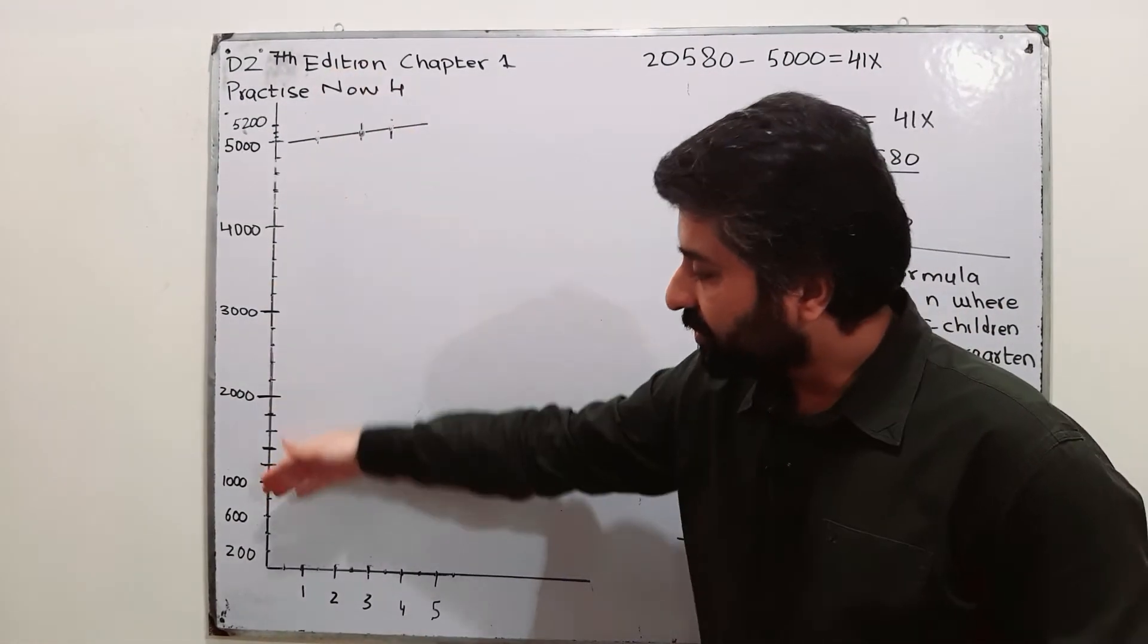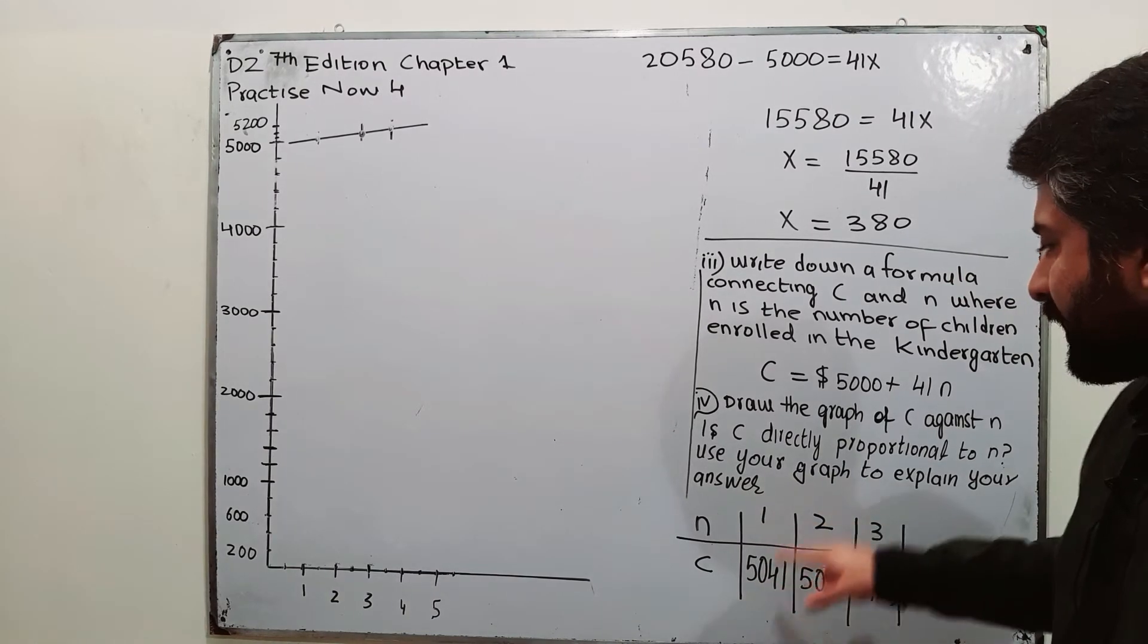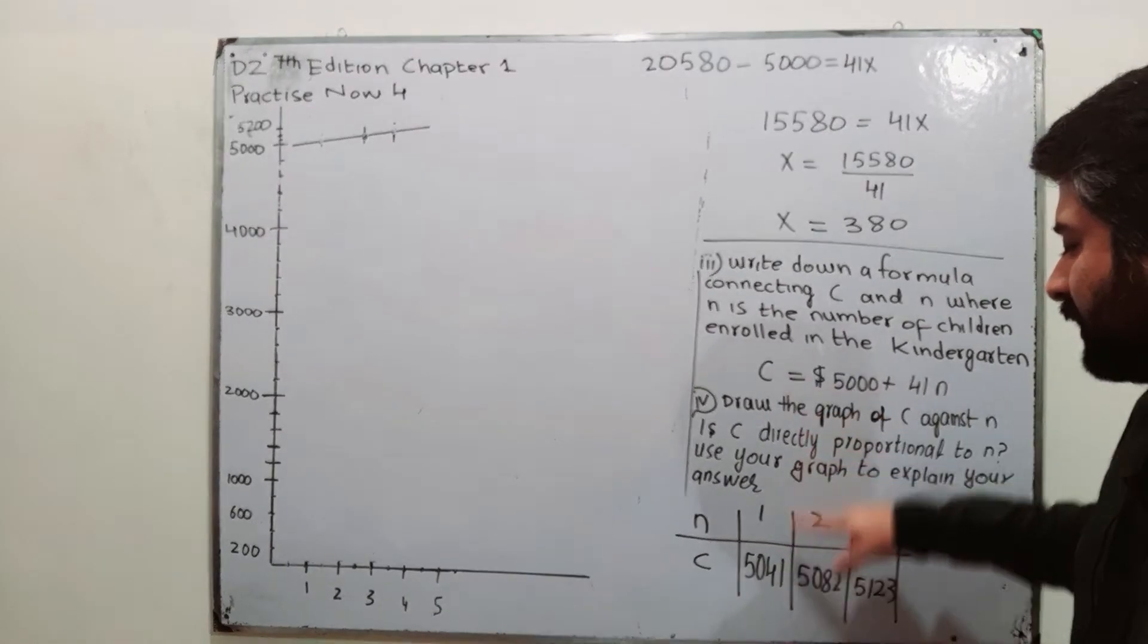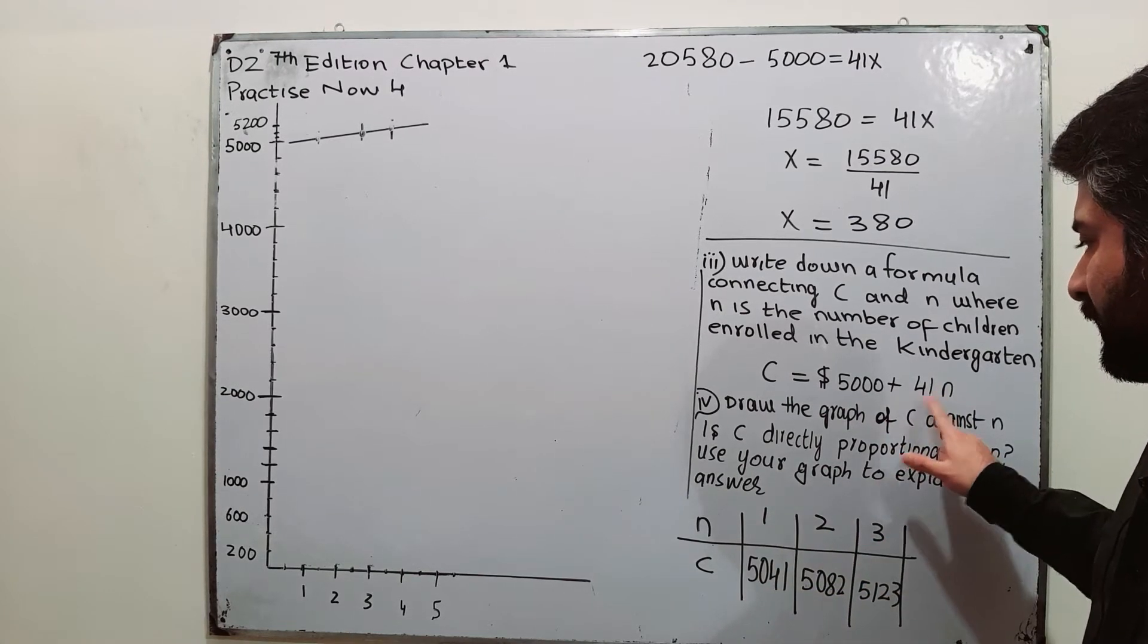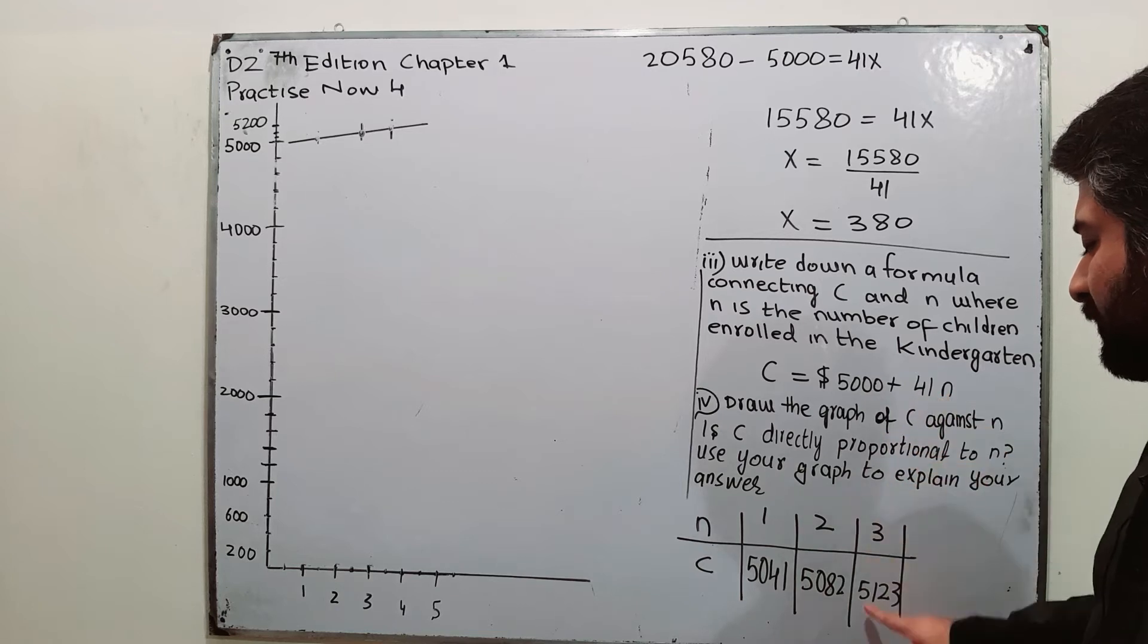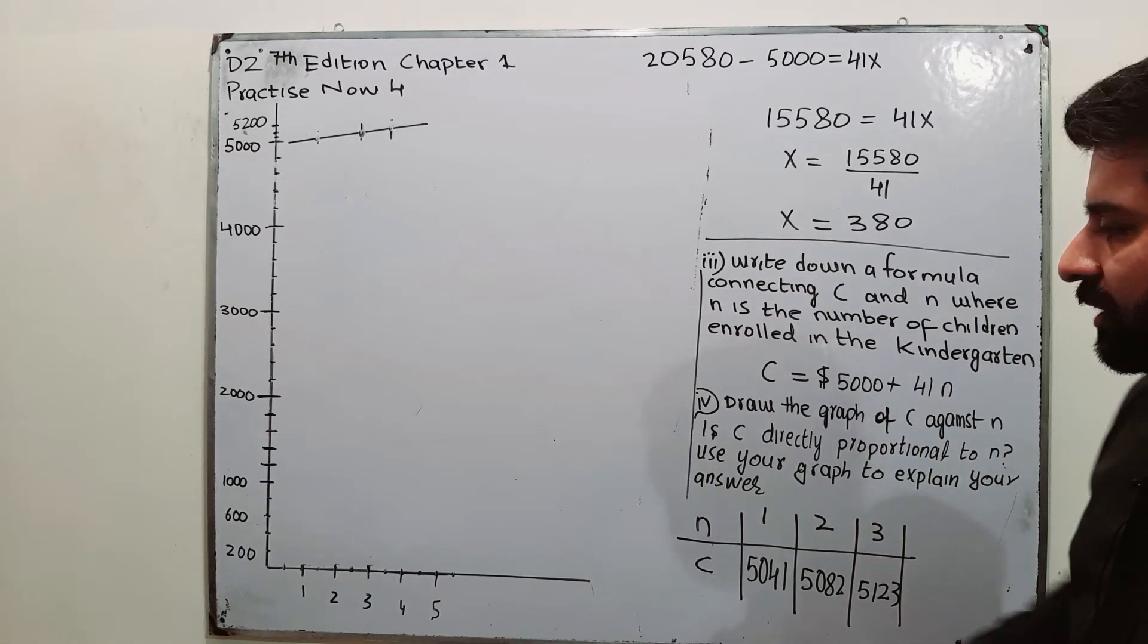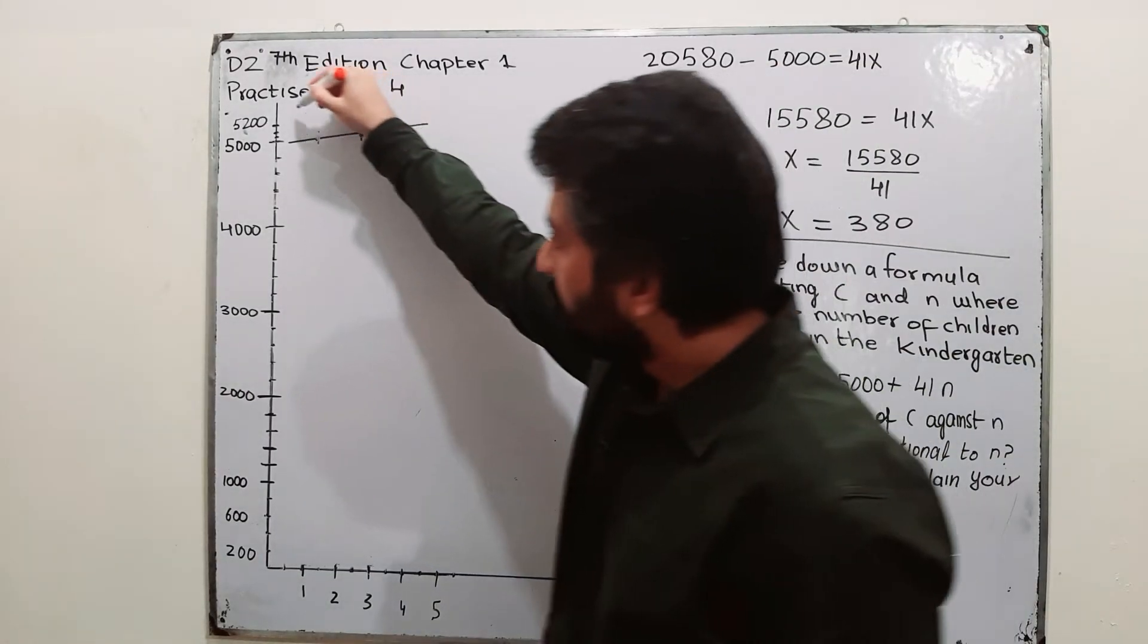How I have plotted this graph? Y axis is for C, X axis is for N. When N is 1, use N1 over here, C will be 5041. When N is 2, over here, C will be 5082. When N is 3, C will be 5123. So, X axis is for N while Y axis is for C, cost.